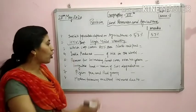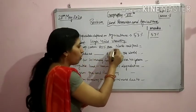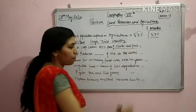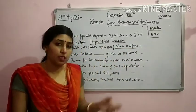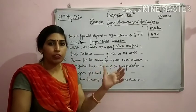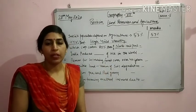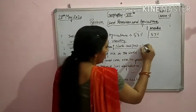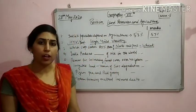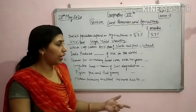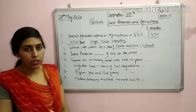Next question: which crop covers 85% area of the north and central part of India? 85% of the crop in central and north India is wheat. If we talk about states, Punjab, Haryana, UP, and Madhya Pradesh are the areas where wheat production is done.